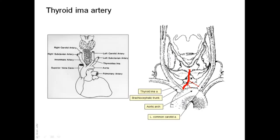There is also another inconstant branch present in about 10% of cases, called the thyroid ima artery. It may arise from the arch of the aorta, from the brachiocephalic trunk, or from the left common carotid, and passes in front of the trachea to reach the gland from below, close to the isthmus.